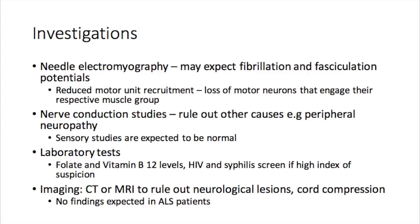In terms of investigations, the key role is to rule out other possible causes. Needle electromyography (EMG) can be performed, and in patients with ALS you can expect fibrillation and fasciculation potentials, reduced motor neuron recruitment, and loss of motor neurons engaging their respective muscle groups. Nerve conduction studies can be employed to rule out peripheral neuropathy, and sensory studies are expected to be normal in motor neuron disease.